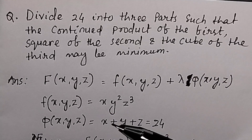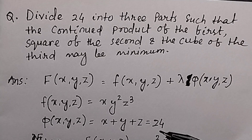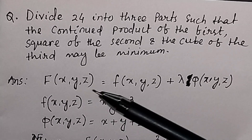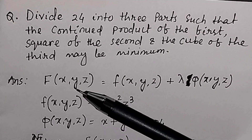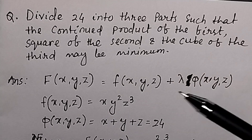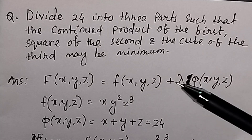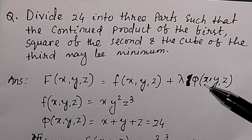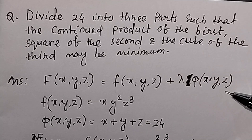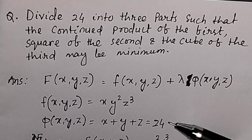We need to find x, y, and z such that x + y + z = 24, and we prove this using the Lagrange multiplier. The Lagrange function is F(x, y, z) = f(x, y, z) + λ·φ(x, y, z), where f(x, y, z) = x·y²·z³ is the objective function, λ is the Lagrange multiplier, and φ(x, y, z) = x + y + z, with the constraint equation x + y + z − 24 = 0.